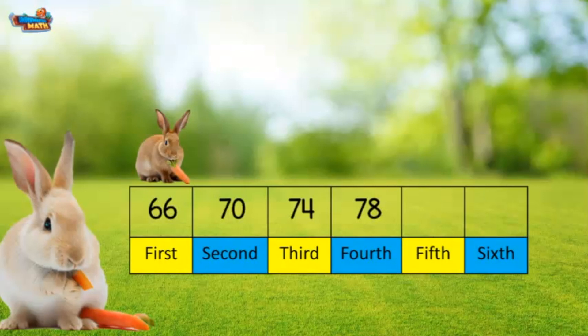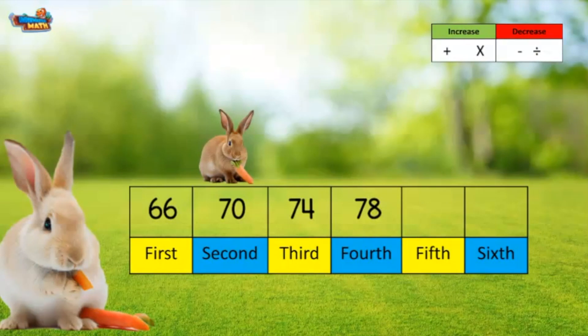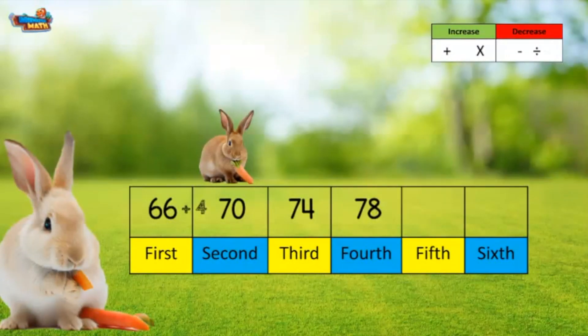To find the rule of a pattern, you start by determining if the numbers are increasing or decreasing. In this pattern, the numbers are increasing. Since the numbers are increasing, the rule is to either add or multiply. I am going to see if addition works. I start by finding the difference between the number in the second and first positions. There is a difference of four.